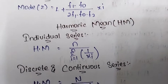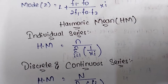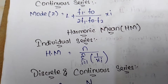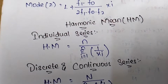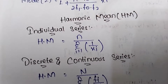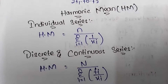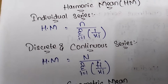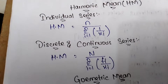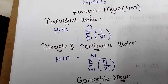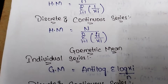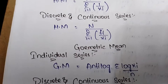Harmonic mean for individual series: HM = n / Σ(1/xi). It is effectively the reverse of the arithmetic mean. For discrete and continuous series: HM = n / Σ(fi / xi). Geometric mean for individual series: GM = antilog(Σlog xi / n), where n equals total frequency.